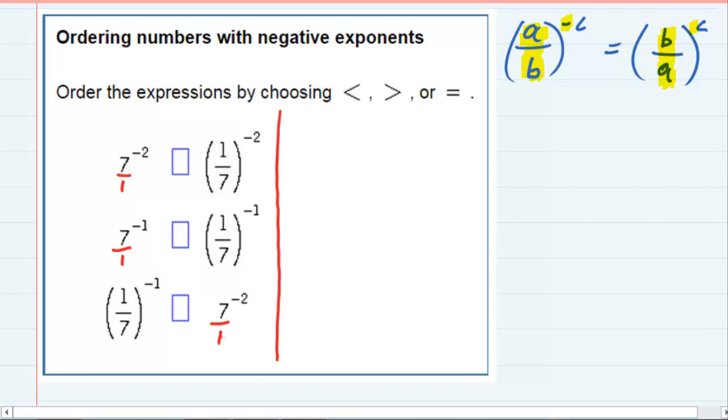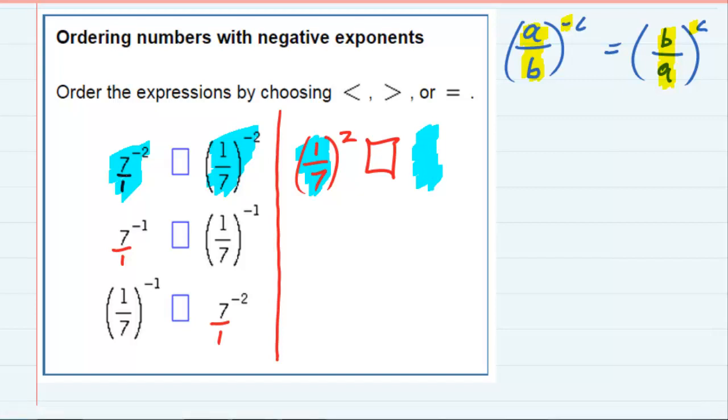And then to get rid of the negative, I can flip it so that this one becomes 1 over 7 squared. I flipped it and made it positive, and the one to the right of it, that one will also flip, but it will become 7 over 1 squared. So I made both of those positive exponents.